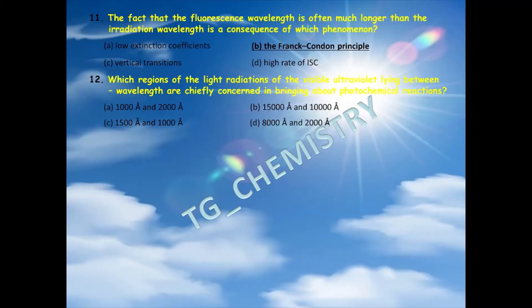Twelfth question: which region of light radiation is chiefly concerned in bringing about photochemical reactions? The right option is option D — 8000 Ångström to 2000 Ångström — the wavelength range associated with photochemical irradiation.